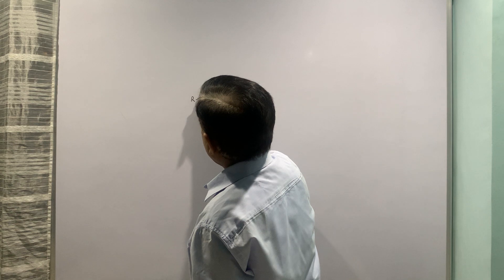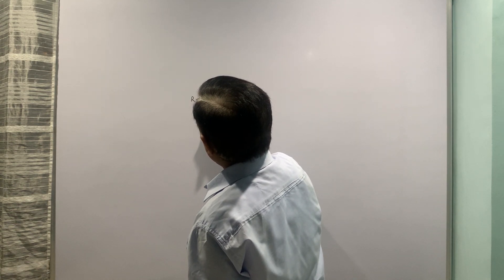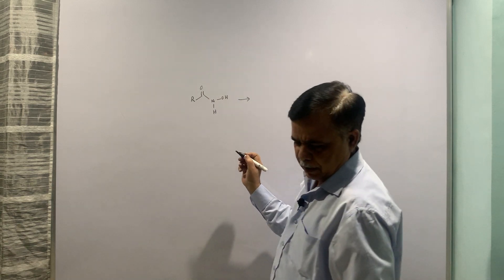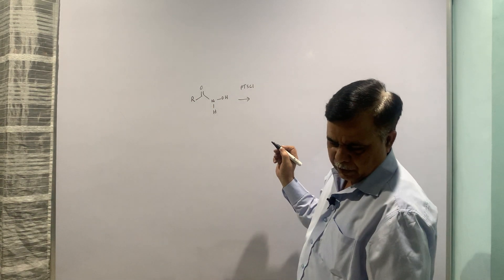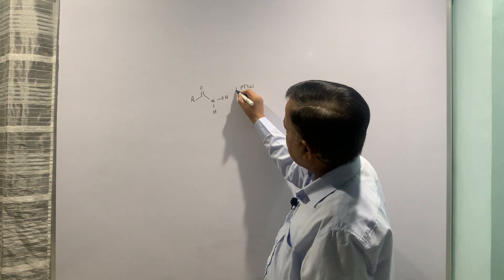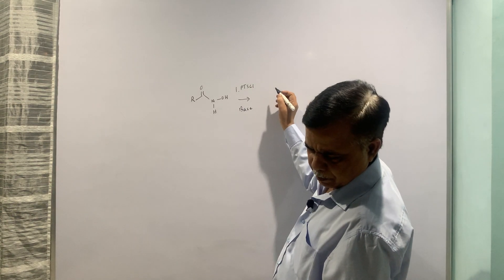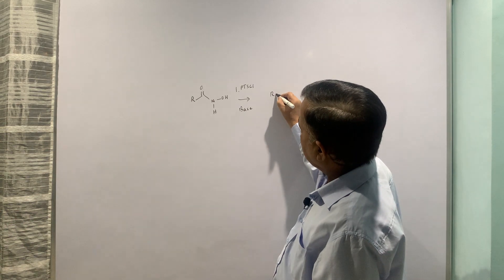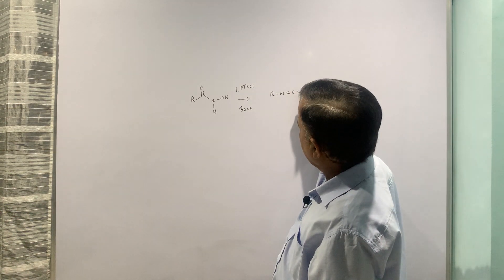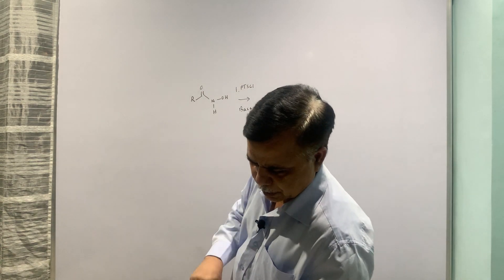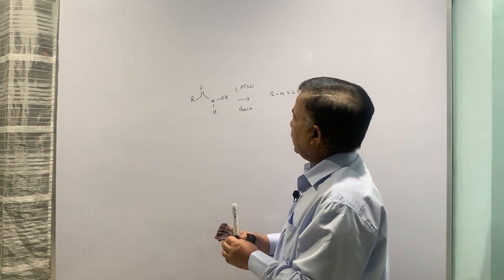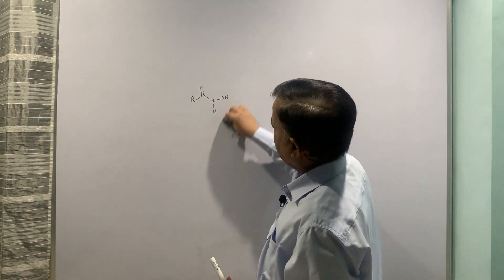Let us do some more examples. This is hydroxamic acid which is treated with para-toluene sulfonyl chloride. That is the first step, and second step is base and you are going to get R-N=C=O isocyanate and then it is a workup part. First of all, the transformation of bad leaving group into good leaving group. That is how it is possible with para-toluene sulfonyl chloride.